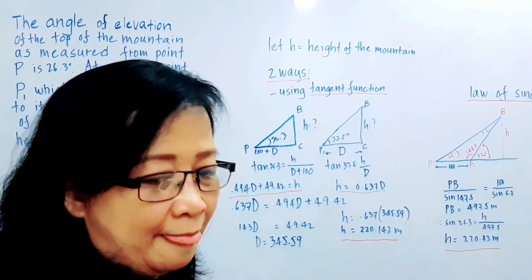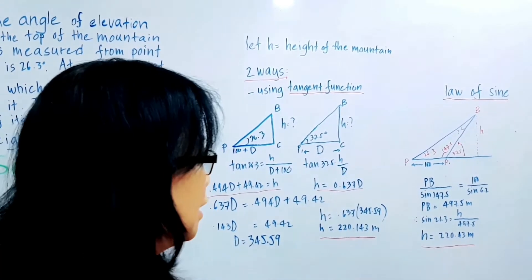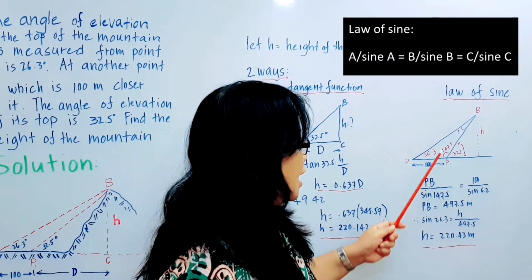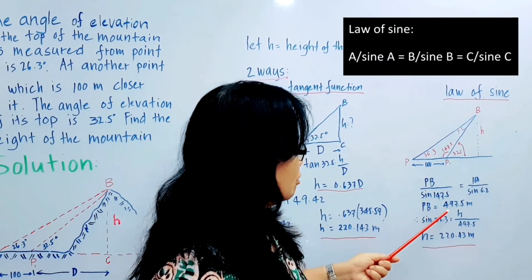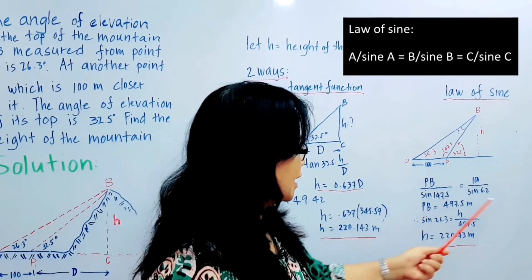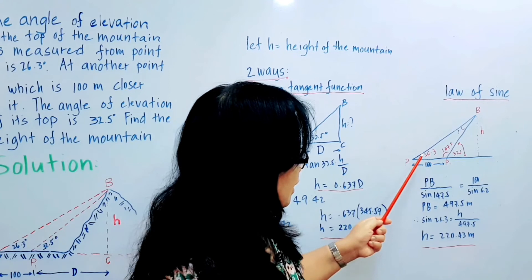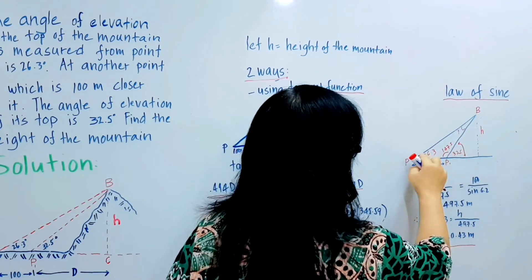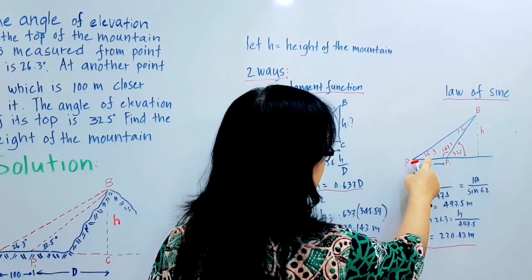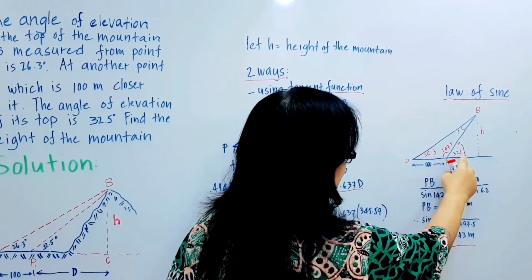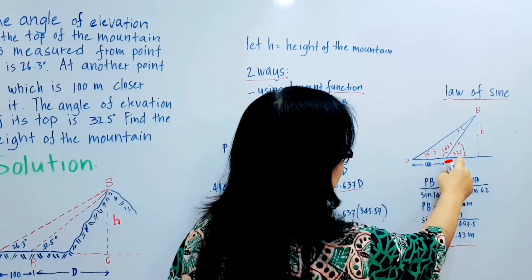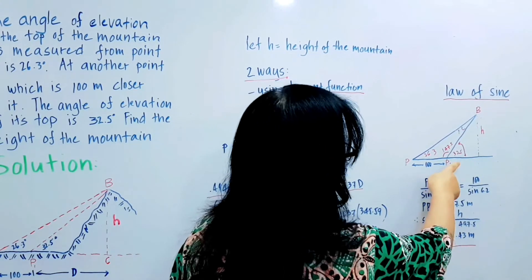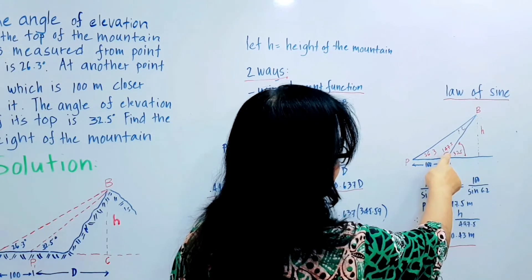If we use the law of sine, the law of sine states that one side over the opposite angle equals the other side over the opposite angle. In this triangle, the given angle is 26.3. Here, we can subtract because the other right triangle has 32.5 degrees. The total from here to here is 180 degrees, so 180 minus 32.5 equals 147.5.